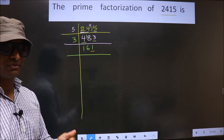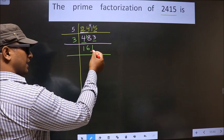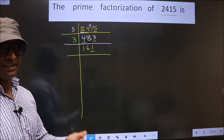Next prime number is 5. The last digit is neither 0 nor 5, so this is not divisible by 5. Next prime number is 7.